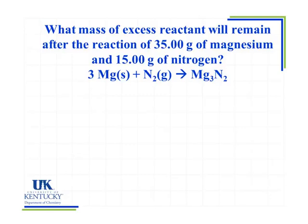What mass of excess reactant will remain after the reaction of 35 grams of magnesium and 15 grams of nitrogen? I need to figure out which reagent is my limiting reagent, and then figure out how much I actually need of that particular reactant. The first thing I want to do is find the molar masses of each substance so I have them available when I begin my calculations.